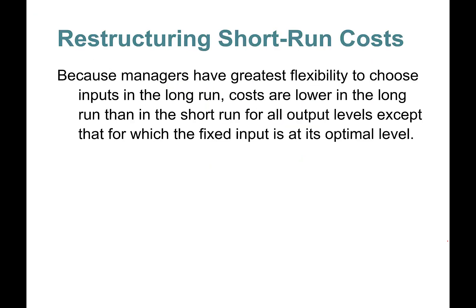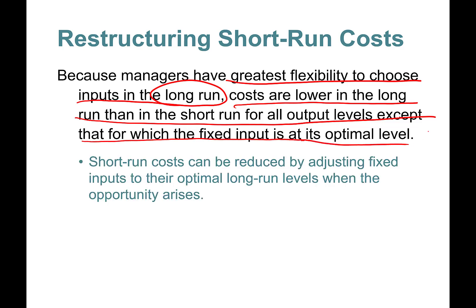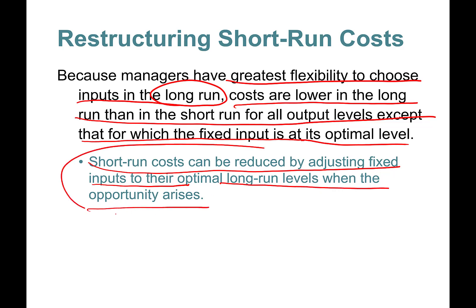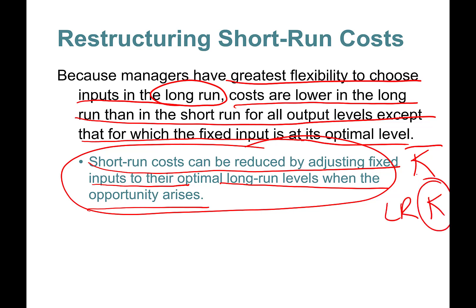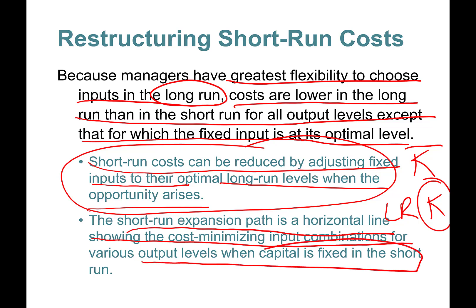Regarding short-run costs: because managers have the greatest flexibility to choose inputs in the long run, costs are lower in the long run than in the short run for all output levels, except where the fixed input is already at its optimal level. Short-run costs can be reduced by adjusting fixed inputs to their optimal long-run levels when the opportunity arises. In the short run, capital is fixed; in the long run, capital is variable and can be adjusted to its best cost level.